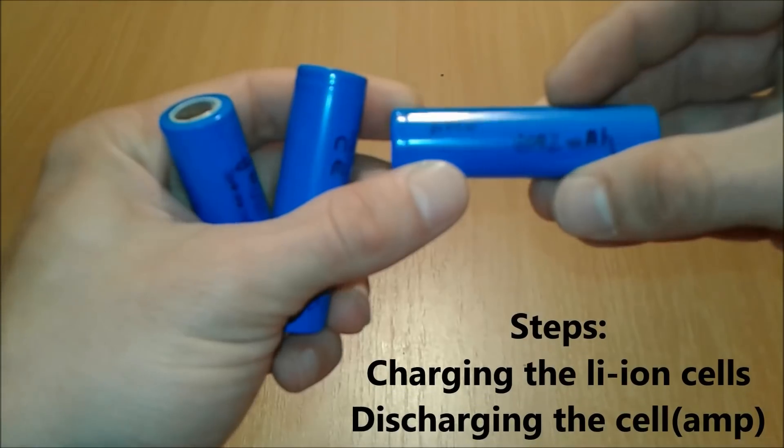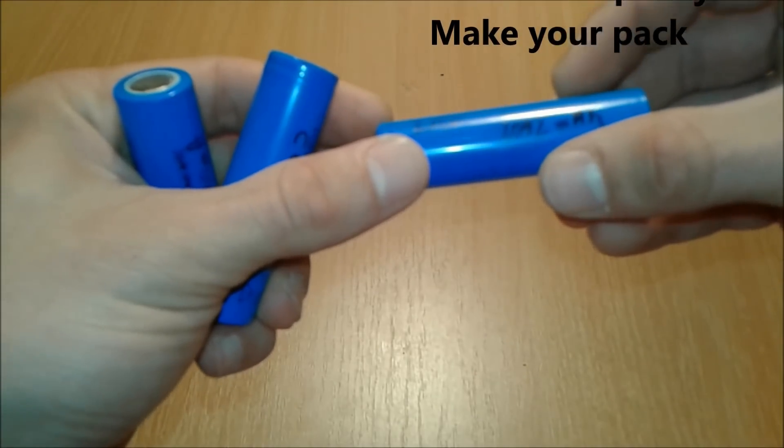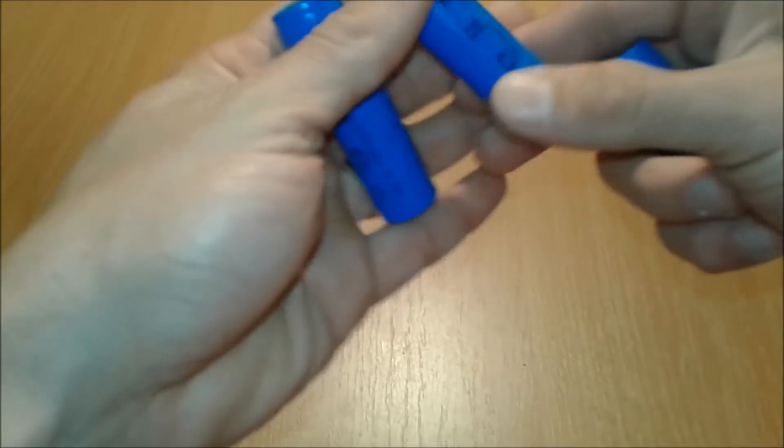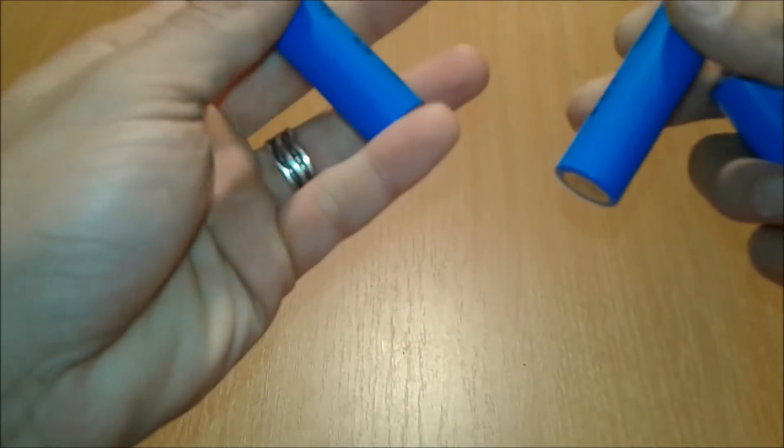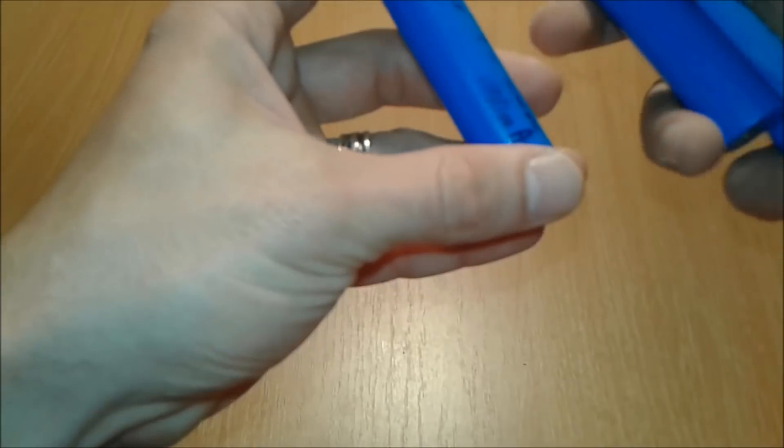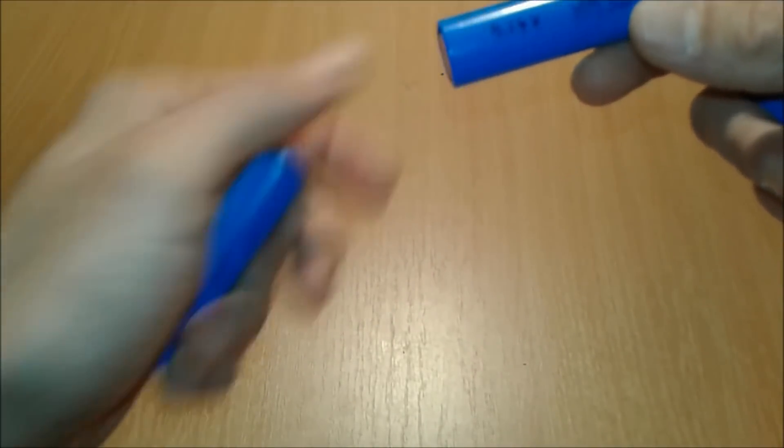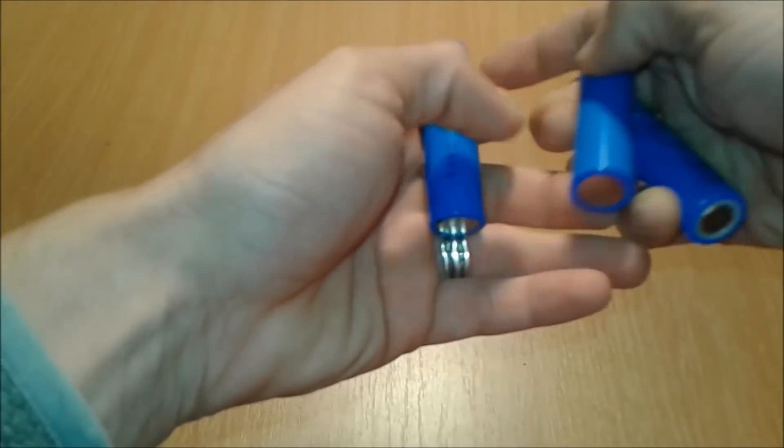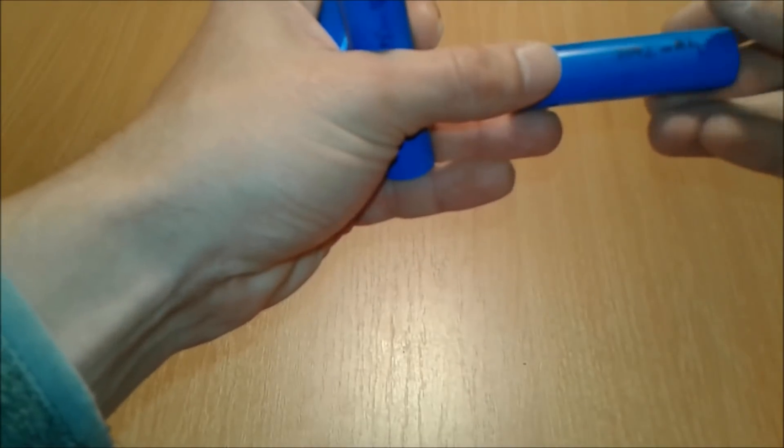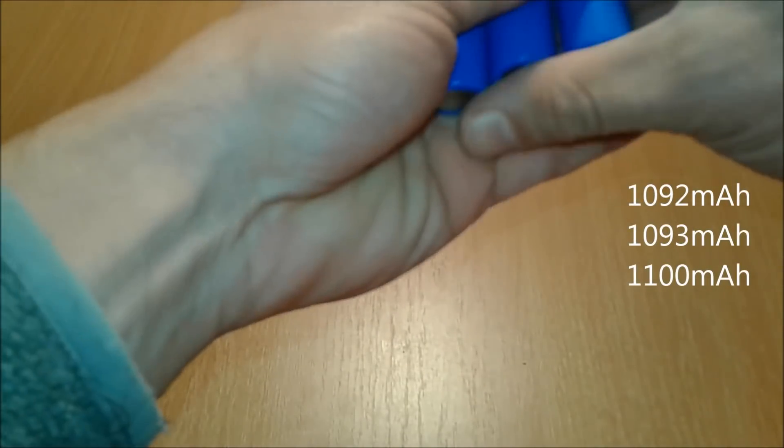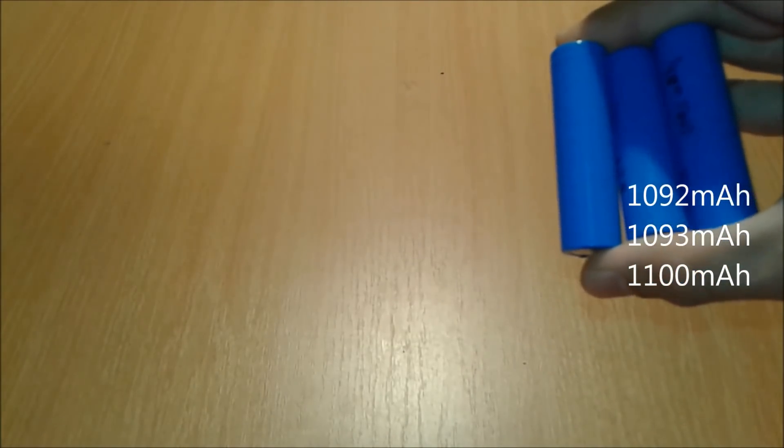We do have here after we already discharged them, so this is 1092, this one is 1100, this one is 1000, so we're gonna search for another one. Yeah, 1093. So this one is 1093, this is 1100, and this one is 1092. All three are kind of matching the capacity.